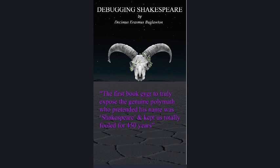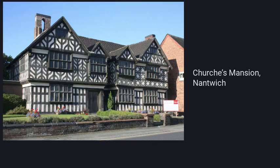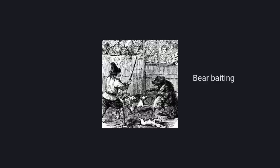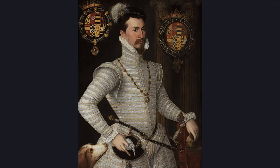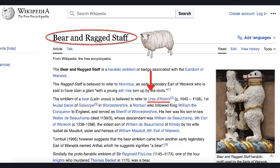Hello, my name is Decimus and welcome to my fourteenth video introducing my book, Debugging Shakespeare. In the last video I showed one or two examples of the Bard's association with Nantwich through the word Bear and the heraldic emblems of Robert Dudley, the first Earl of Leicester.